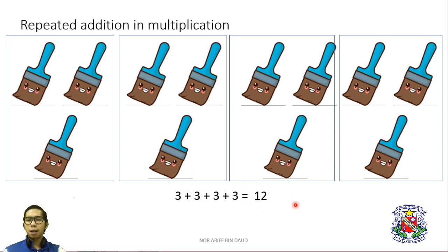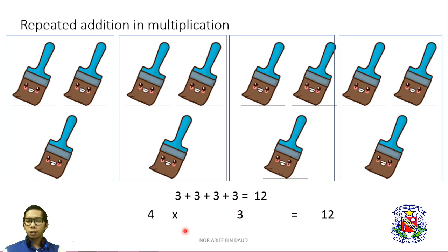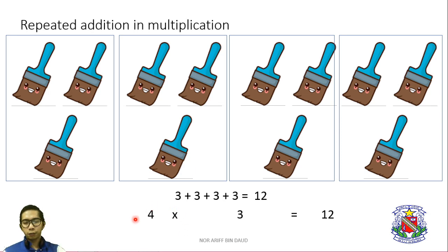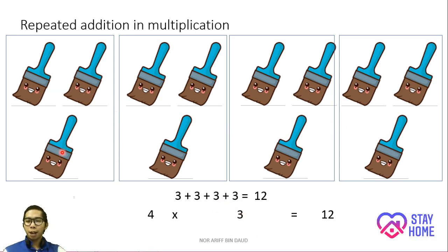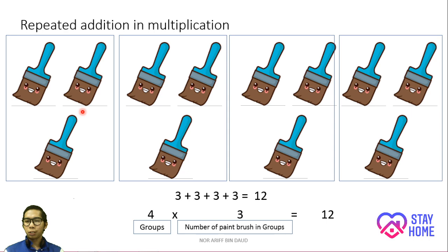How to put the answer in a multiplication sentence? The answer will be like this: 4 times 3 equals 12. But teacher, why can't I put 3 times 4? The same answer, right? I tell you — listen carefully — in multiplication, the group we must put in front. 4 stands for 4 groups of paintbrush, 3 stands for 3 paintbrushes in each group, and 12 stands for the total of paintbrushes we have here all together.